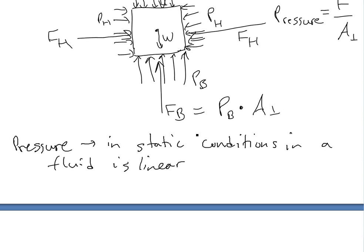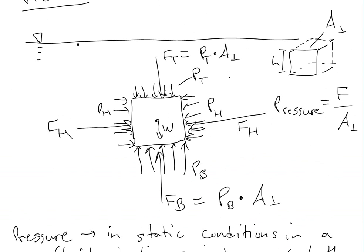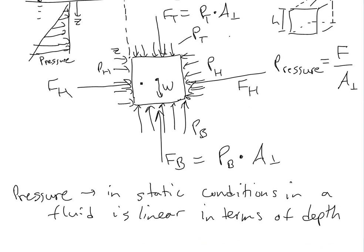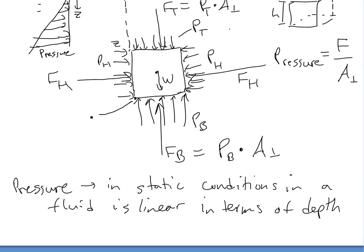Pressure in static conditions in a fluid is linear in terms of depth — I'll show this in another video. The pressure profile would get bigger and bigger going downward, linear like this. This is height z going down, and this is the pressure axis. We need to know the depth here — we'll call the top depth z, and the bottom depth z plus h, because h is the height of the object.